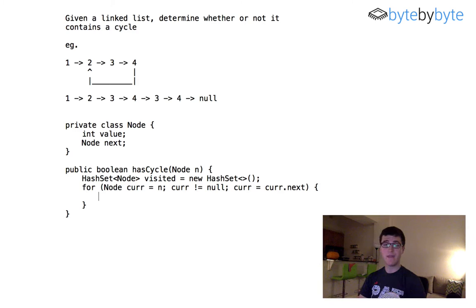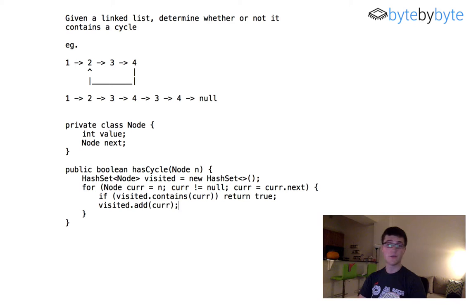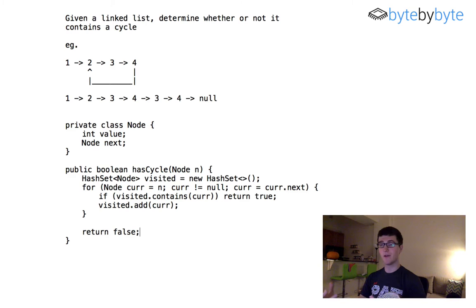Inside the loop, all we have to do is: if visited contains cur, then we know we have a cycle and we return true. Otherwise we say visited.add(cur) to add our current node to visited and keep going. If we get to the end of the list, cur equals null and we break out. If we make it to the end, we return false because that means we found the null value at the end of the list. This solution takes O(n) time and O(n) space.